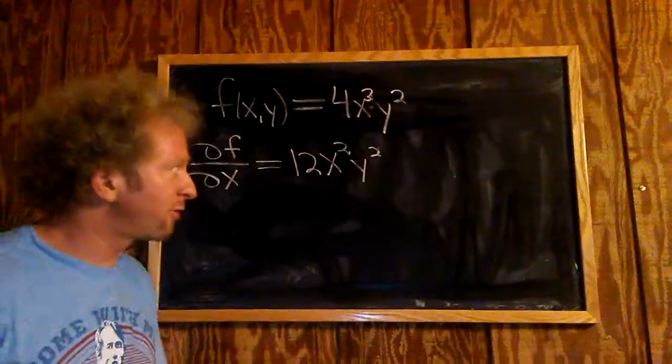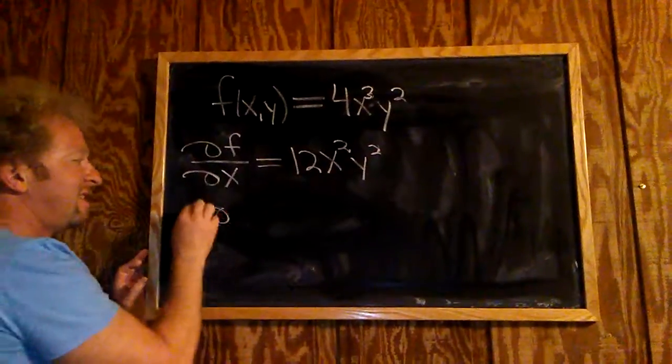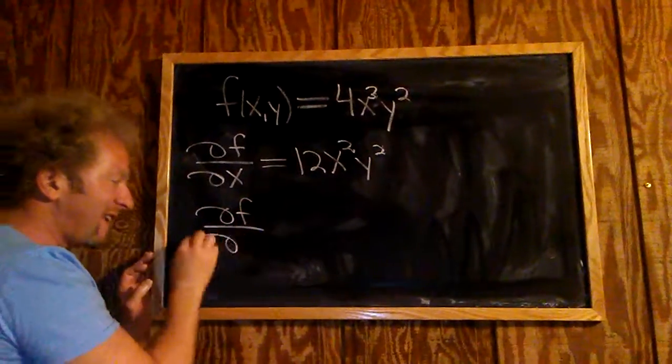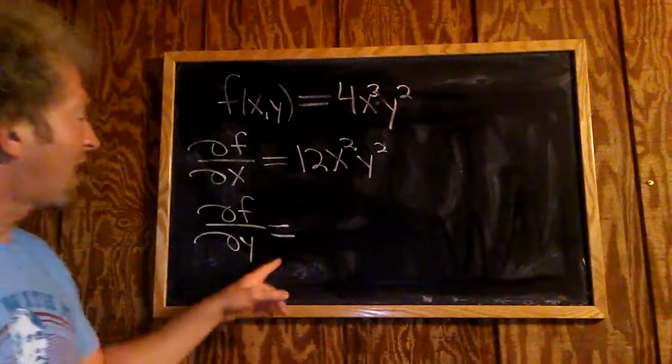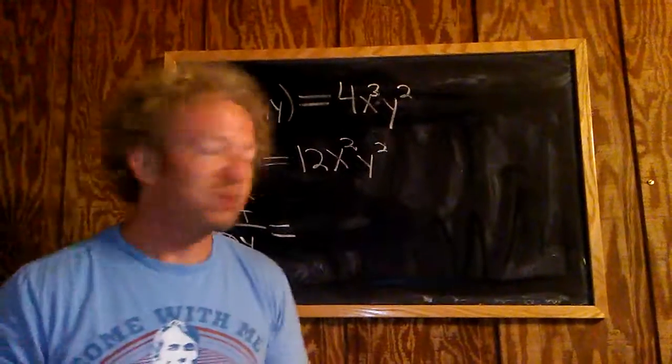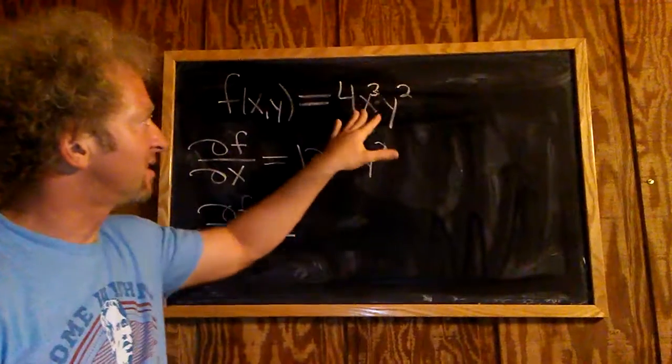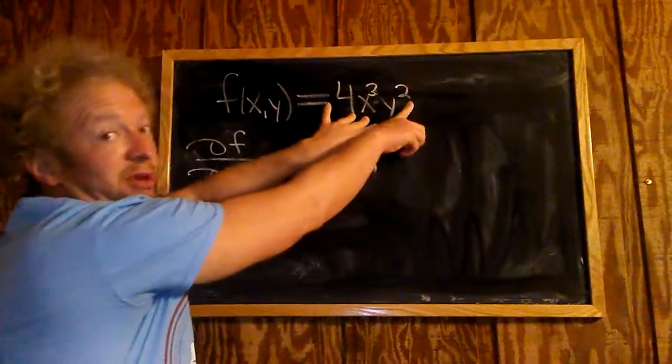Now we're going to find the partial derivative with respect to y. So del, that's what I love about that. Del y equals, well now we're taking the derivative with respect to y. So we treat the x's as constants. We leave this alone, and we're just differentiating the y.